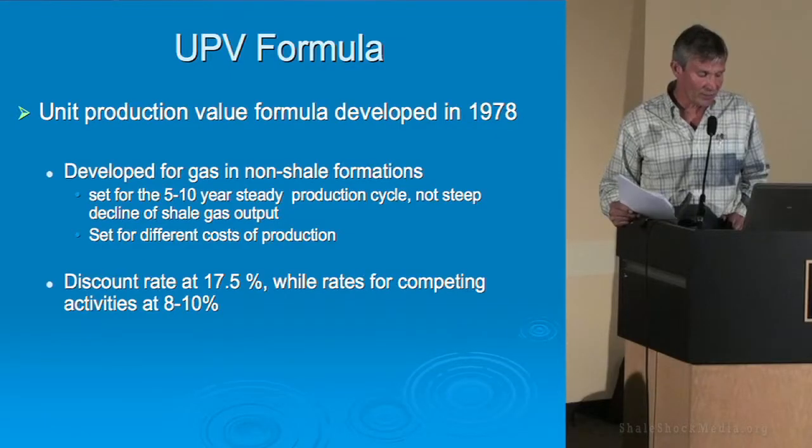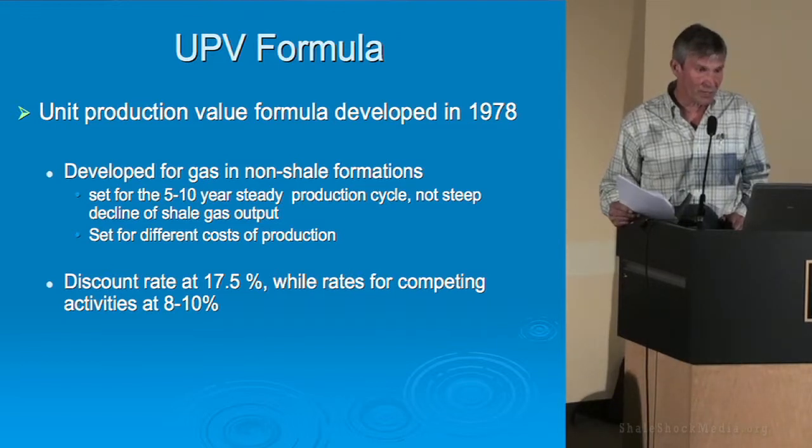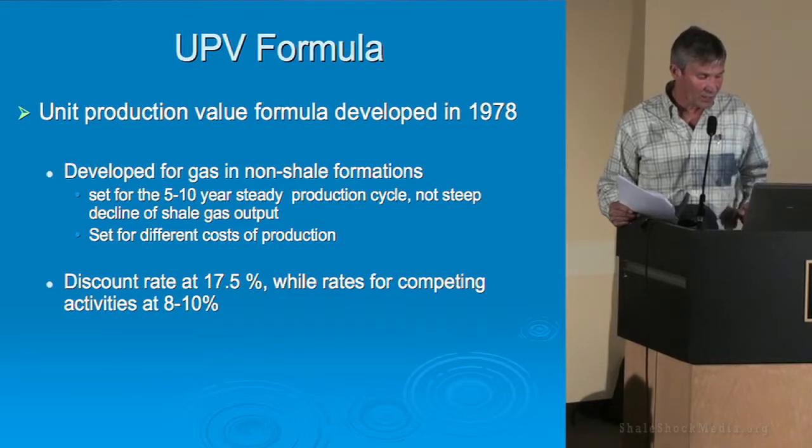There are also different costs of production. Drilling a vertical well versus one that goes down and turns and runs for a mile involves much different costs, as well as containment ponds for water used for fracking and a whole fleet of fracking trucks. There's another interesting part of the UPV formula: part of the formula is a discount rate of 17.5% as the minimum. For competing industries, that rate is 8% to 10%. A question begs to be asked as to why this industry has such a high discount rate.